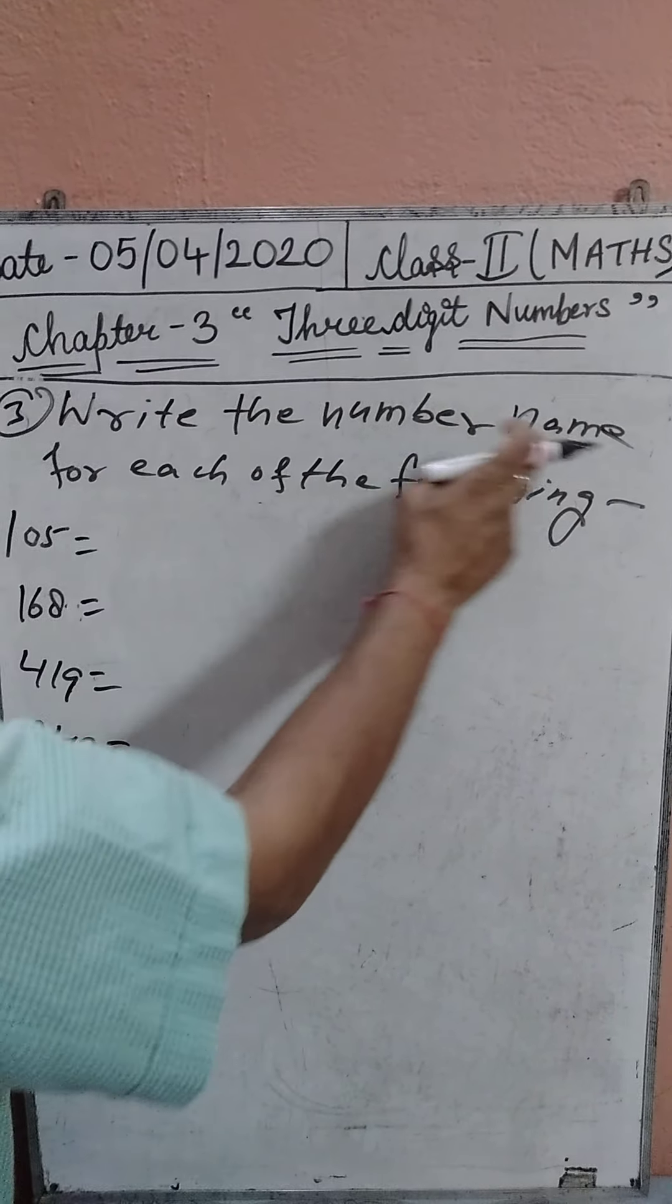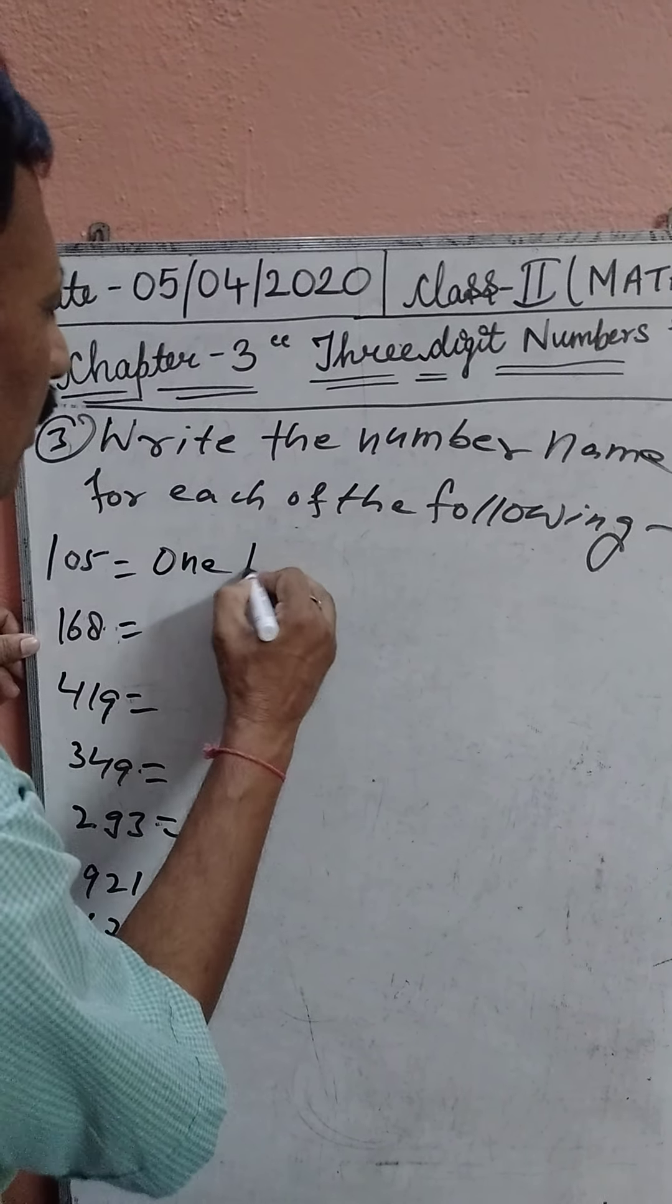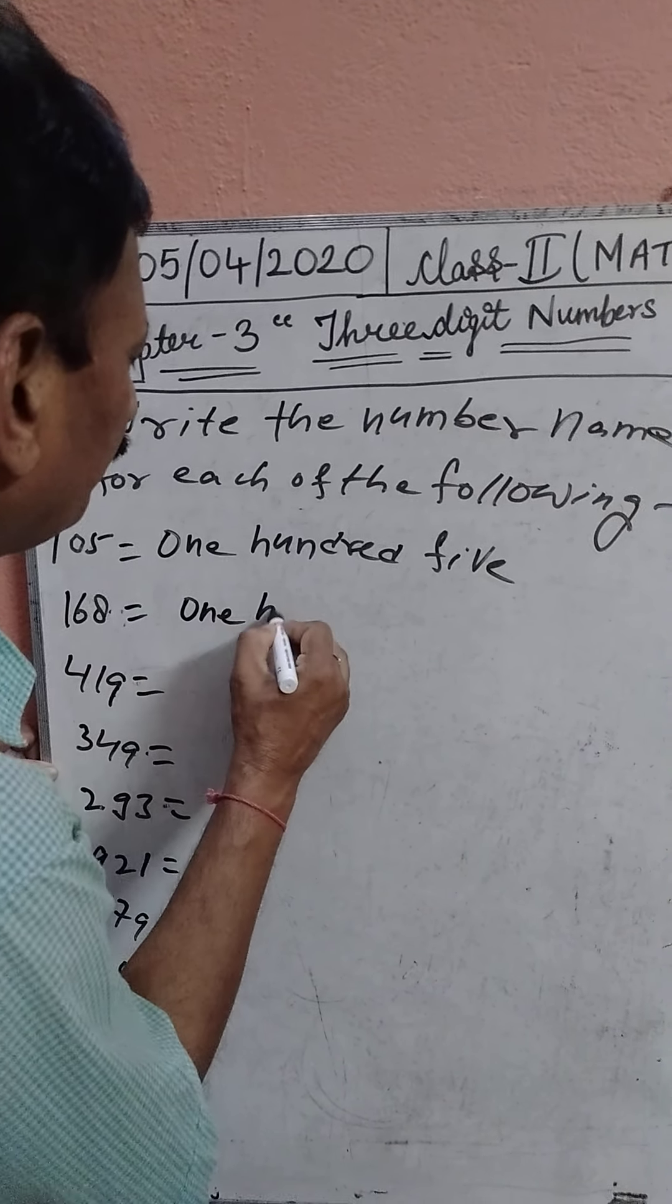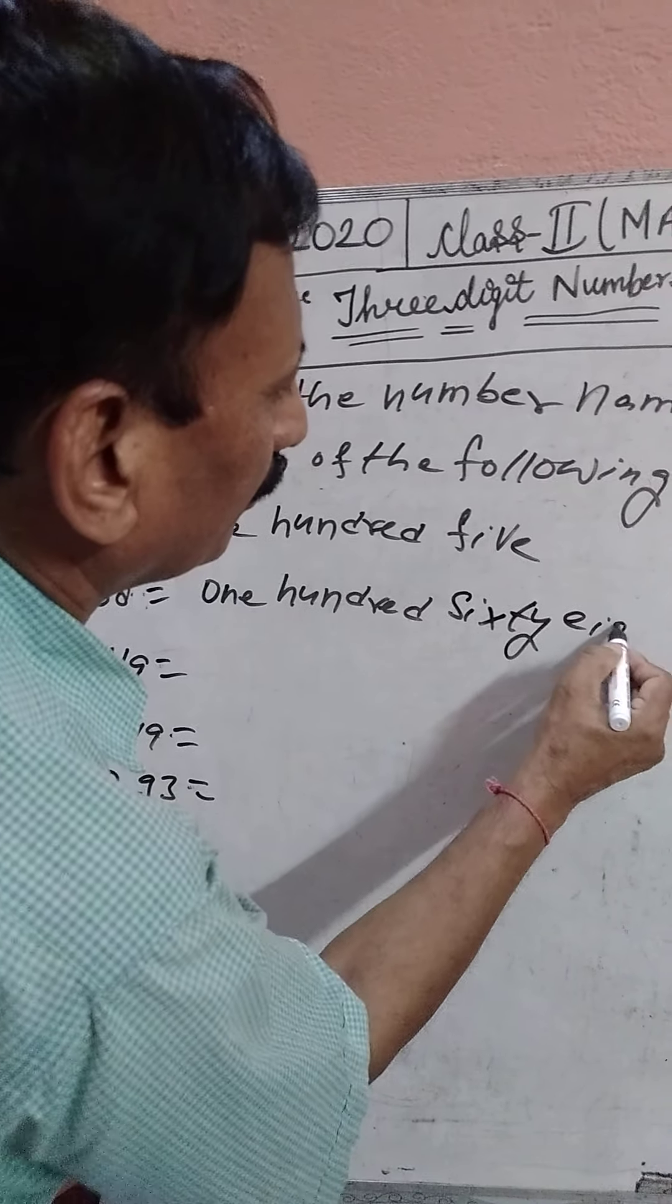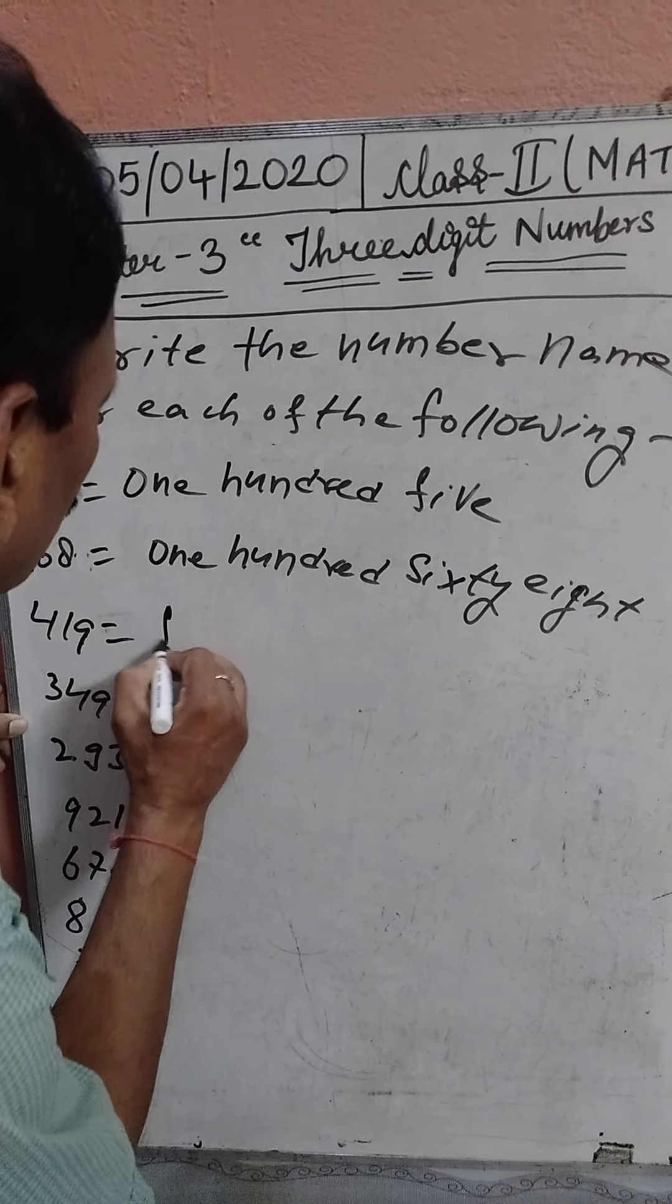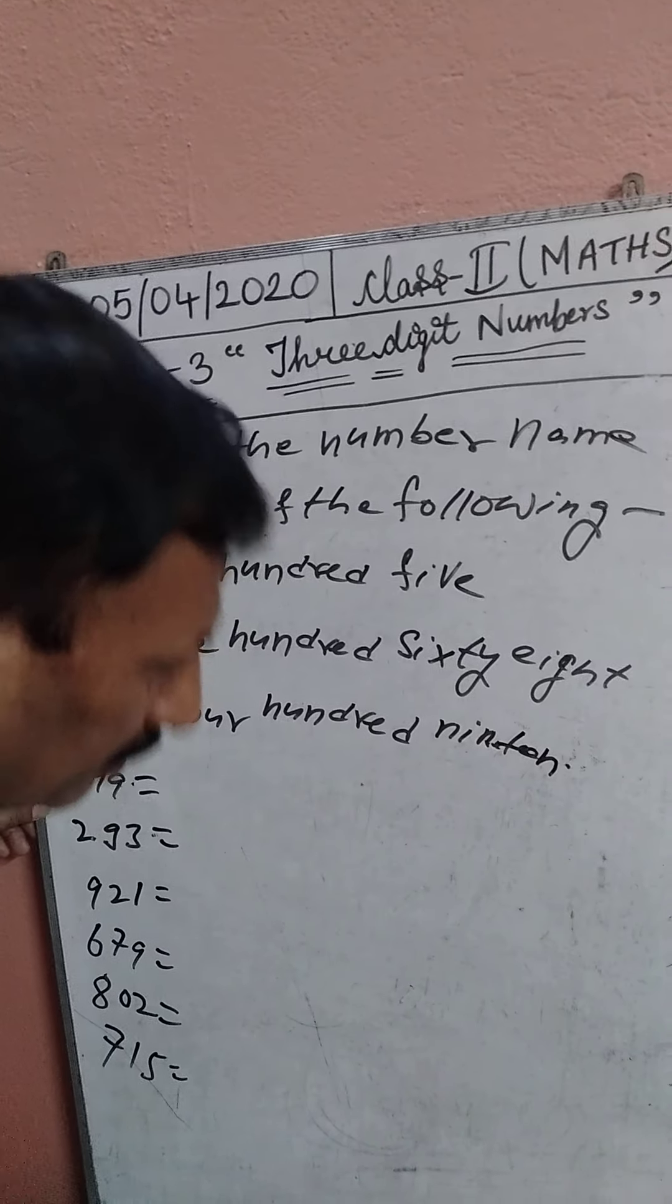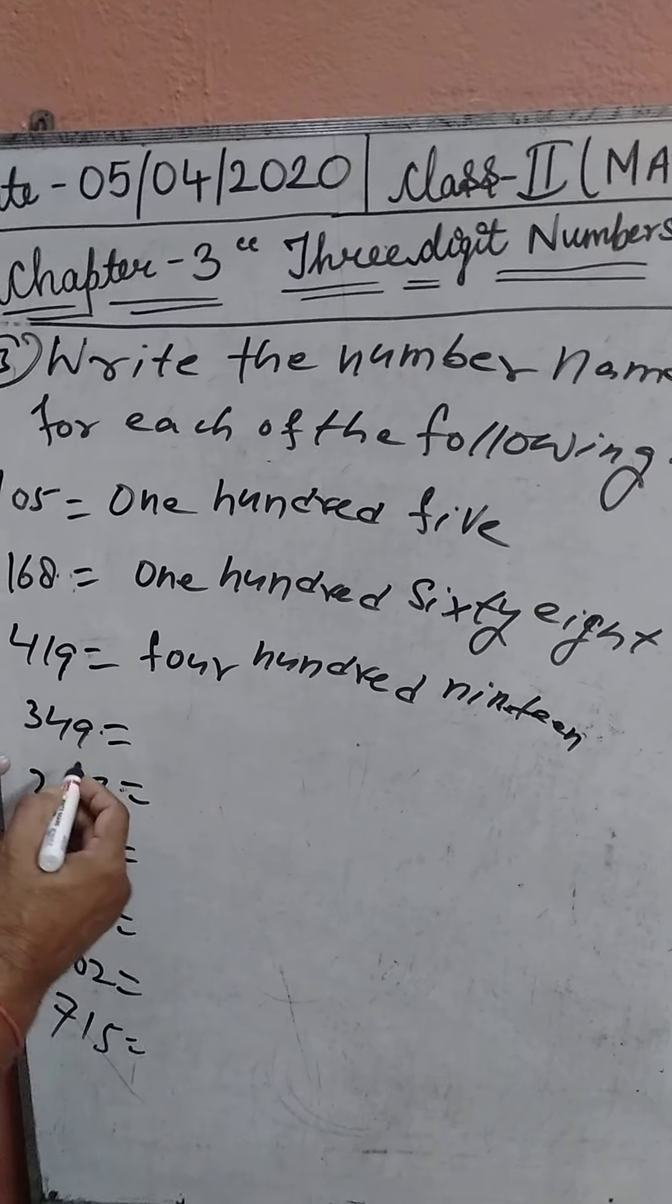105. 168. Next, 419: four hundred nineteen.